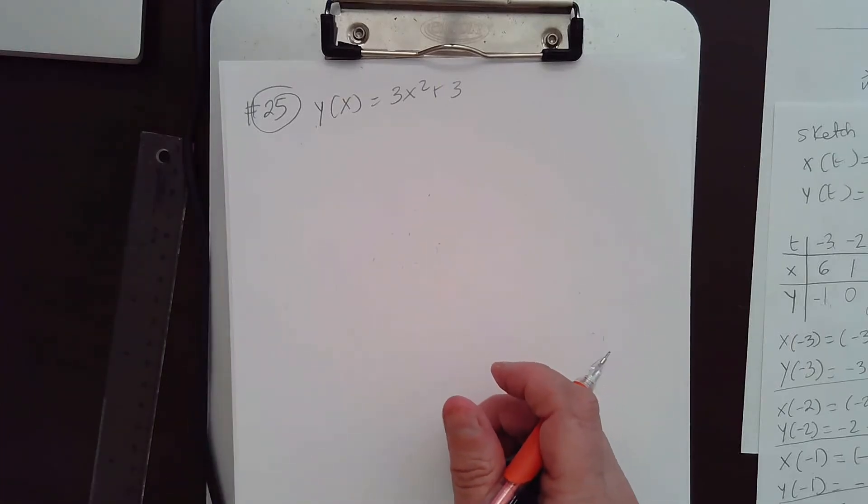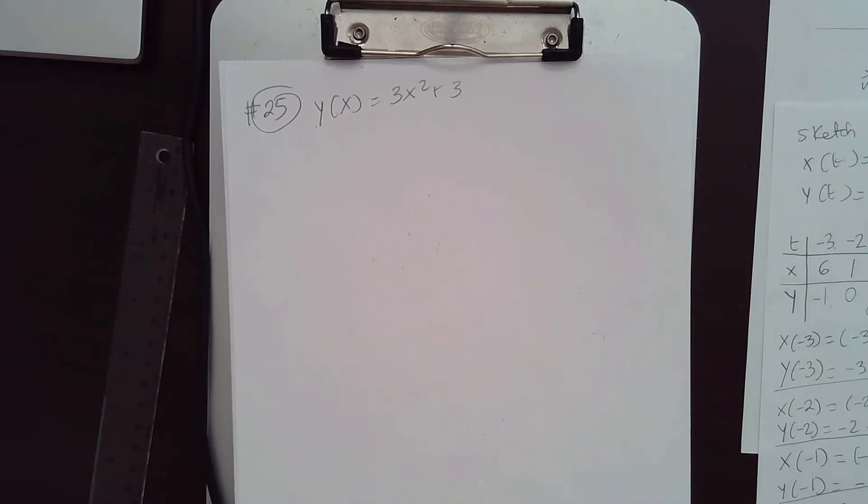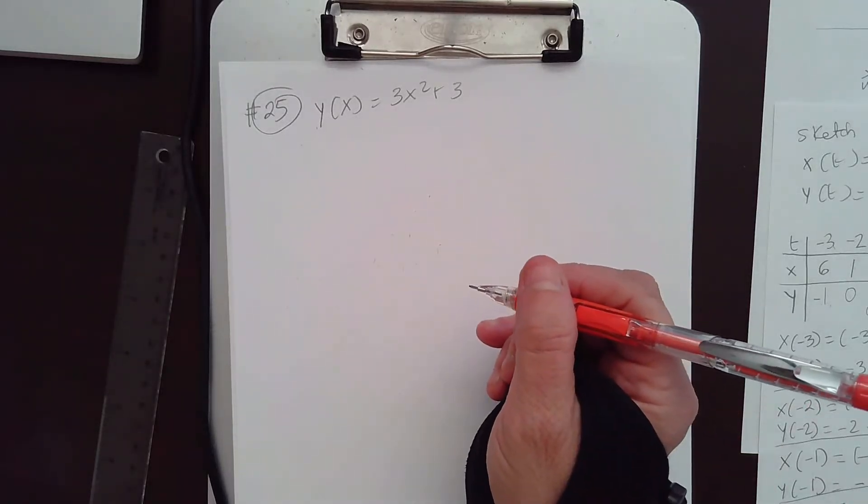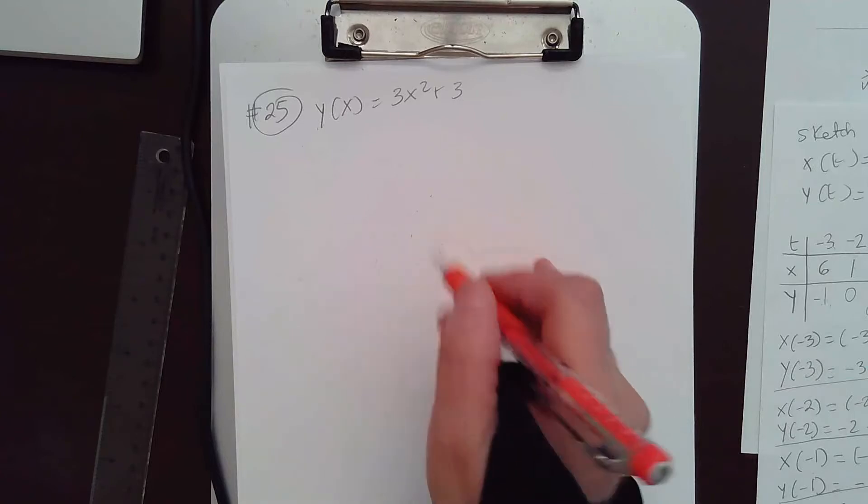Okay, everybody, hello again. We're going to do a few more problems in writing a parametric equation for Cartesian equation. I had another problem, but I looked at the book and I like a couple of problems, so we want to do them here. This is number 25. They want us to write a parametric equation for this Cartesian equation.